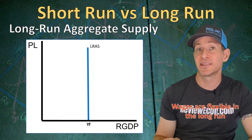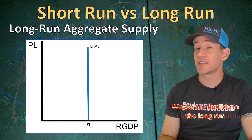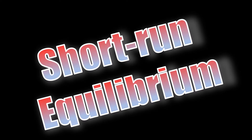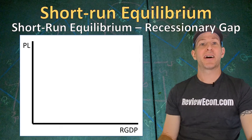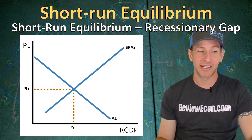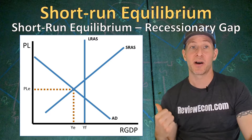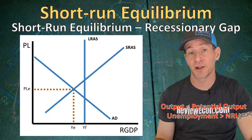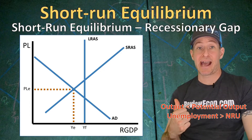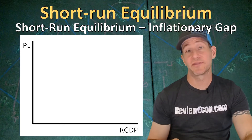We went into more detail on this in the aggregate supply video, so I won't rehash that here. In the long run, the economy will produce the full employment level of output. We can graph out short-run equilibrium by having the current equilibrium point being to the left of the long-run aggregate supply curve. When you graph out the AS-AD model like this, that also tells us that the unemployment rate is going to be greater than the natural rate.